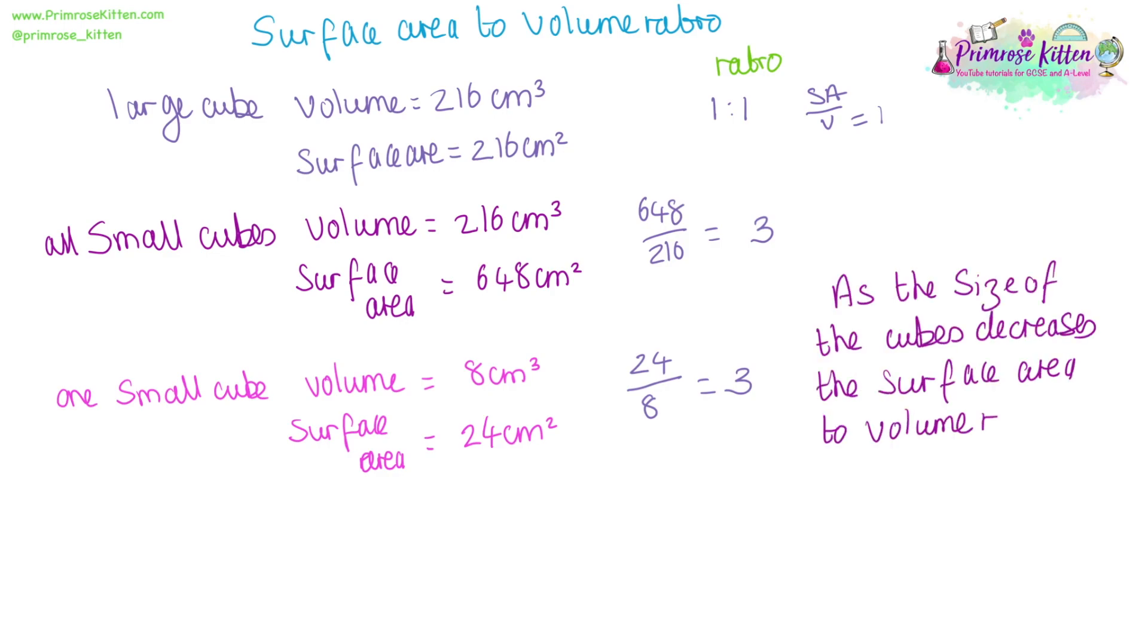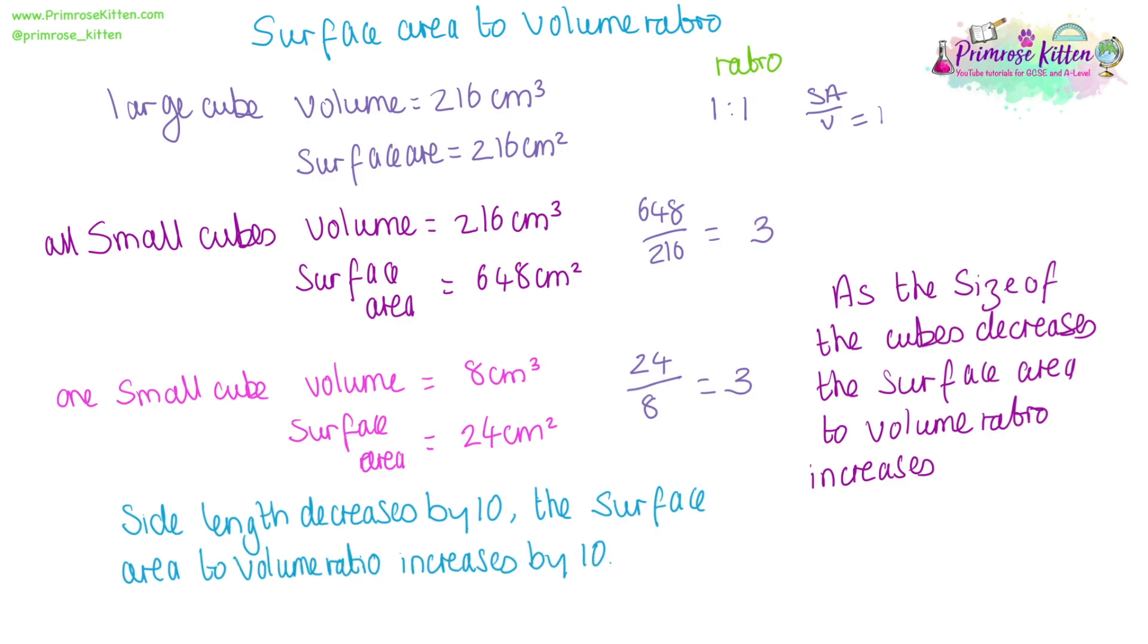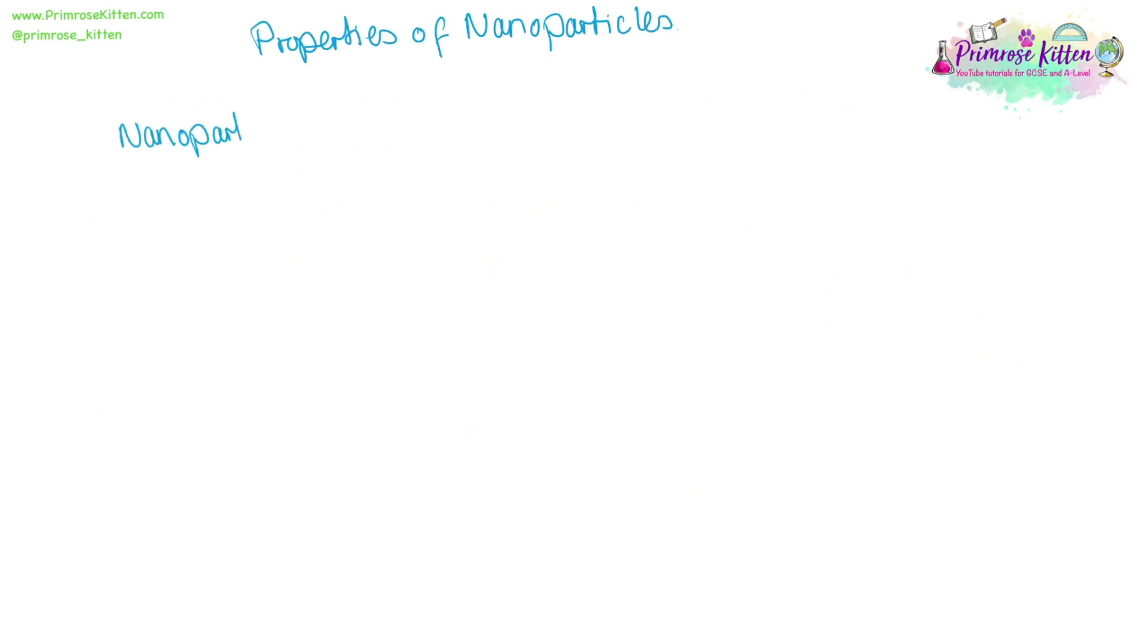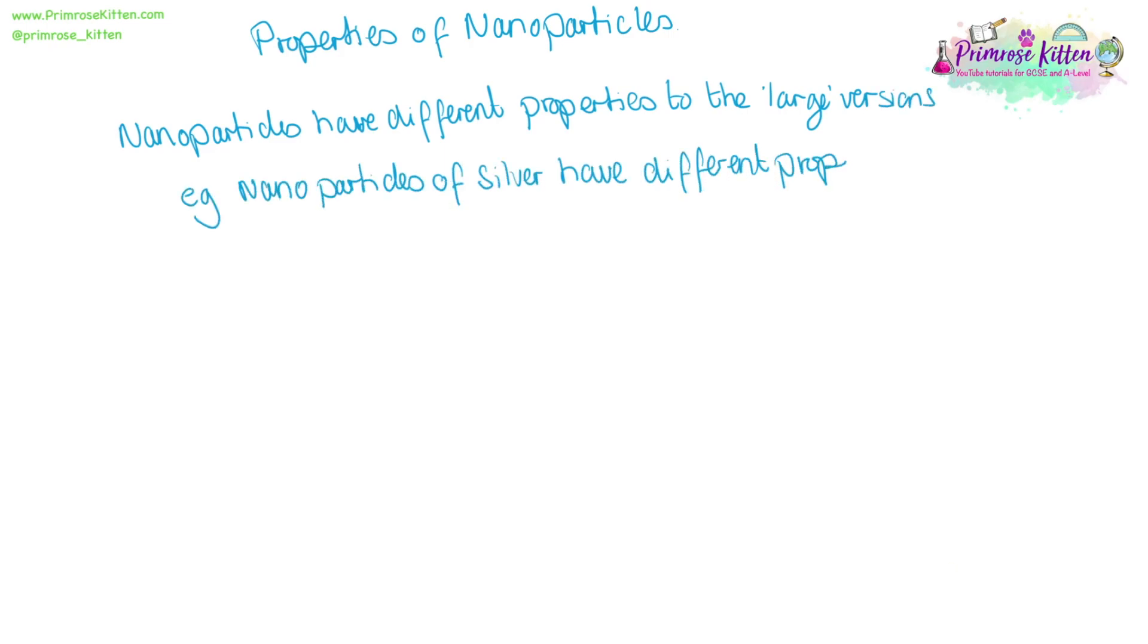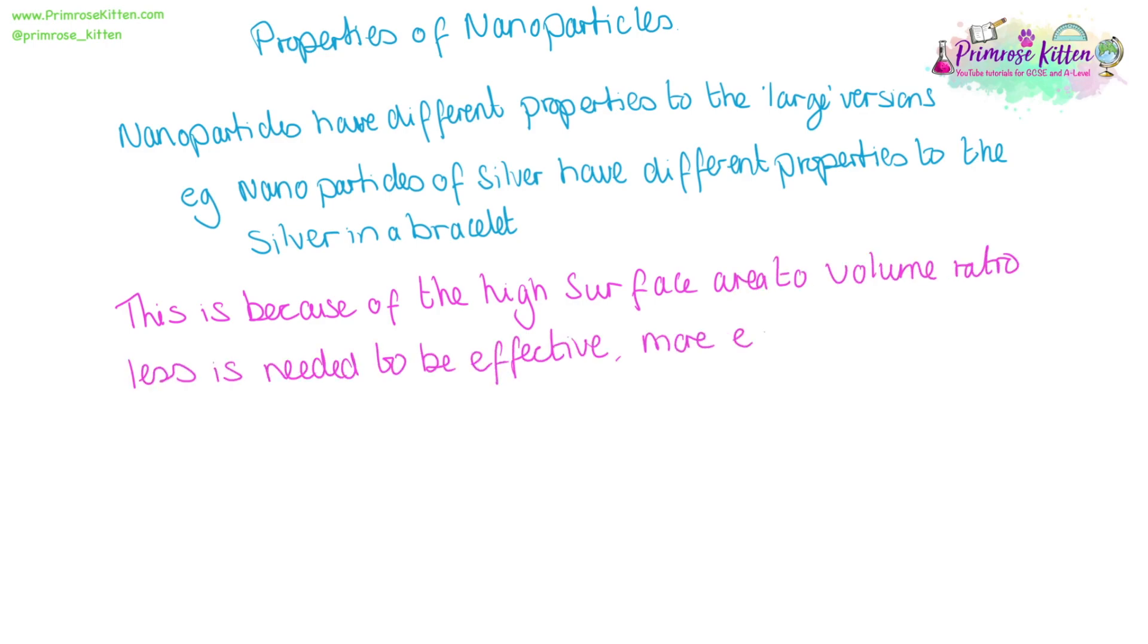As the size of the cubes decreases, the surface area to volume ratio increases. As the side length decreases by a factor of 10, surface area to volume ratio will increase by a factor of 10. And this large surface area to volume ratio is what gives us the interesting properties of nanoparticles, because they will have different properties to the large versions. Nanoparticles of silver will have different properties to silver that you might see in a silver bracelet. And this is due to the high surface area to volume ratio. You will also need less to be effective, potentially making it more economical.